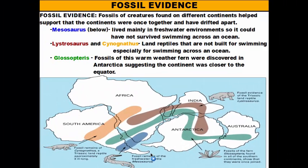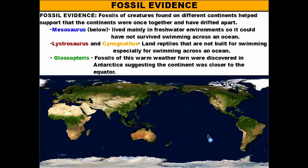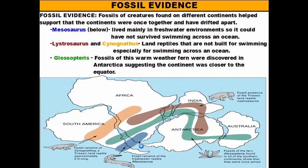Mesosaurus is a freshwater reptile — it lives in lakes. It was found in South America, at the southern tip, and also in southern parts of Africa. The problem is that South America and Africa are separated by a massive body of water, the Atlantic Ocean. Some might think Mesosaurus could have swum across, but the sticking point is that Mesosaurus lived in freshwater, and freshwater animals cannot survive in saltwater for very long. So it would have been impossible for Mesosaurus to make this trip. This supports the idea that these landmasses must have been connected or very close together to allow Mesosaurus to populate both continents.